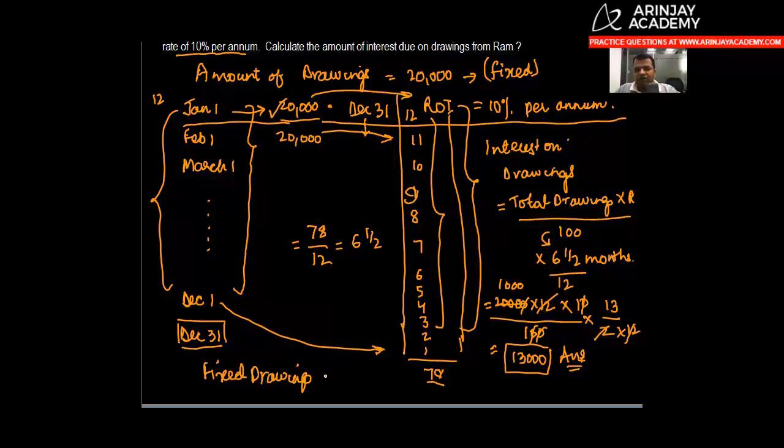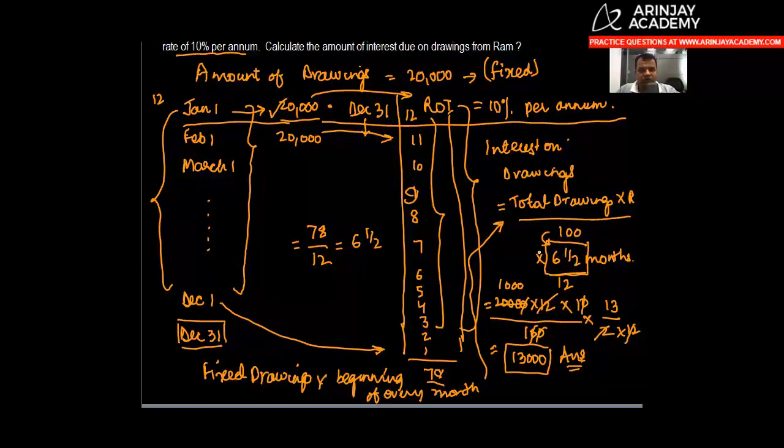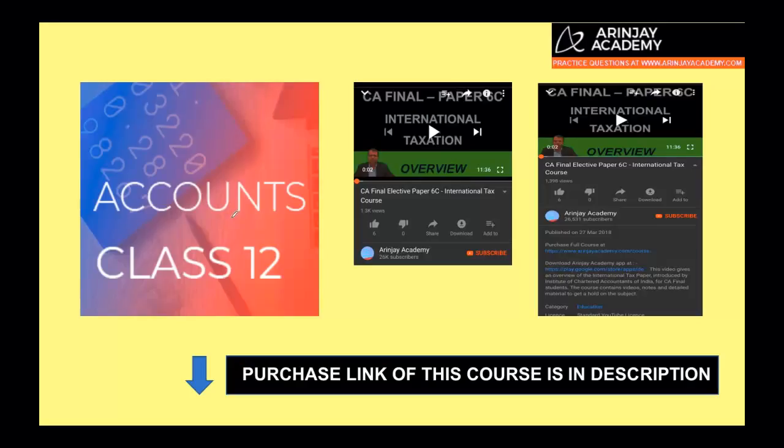At the beginning of every month, the interest on drawings equals total drawings into rate divided by 100 into 6.5 months. I hope you would have understood this video. Look forward to seeing you in many more videos from MyEduBook. Thank you.